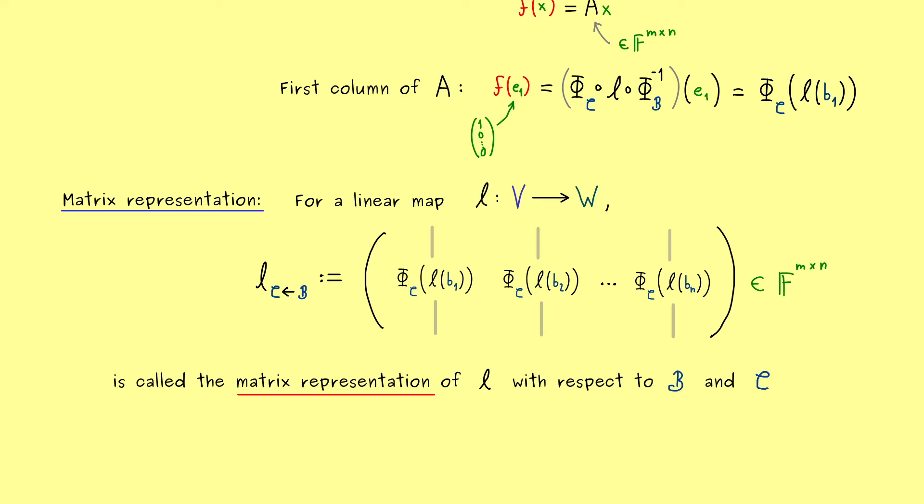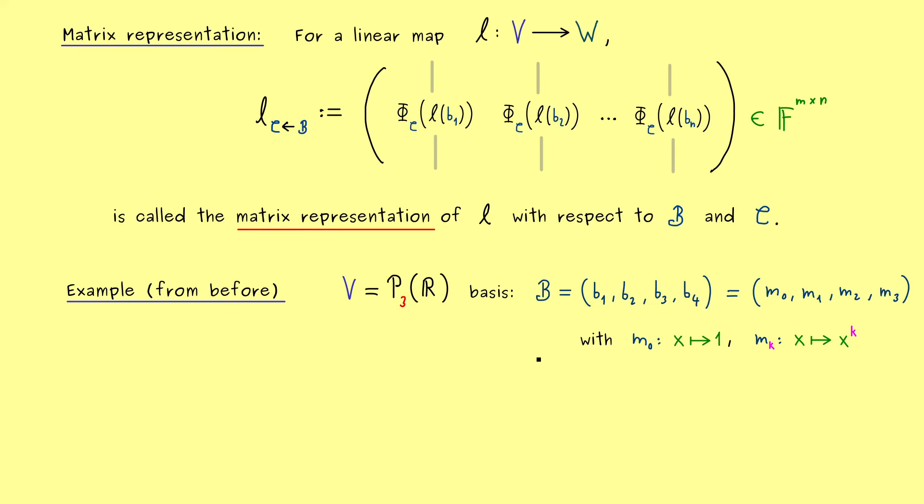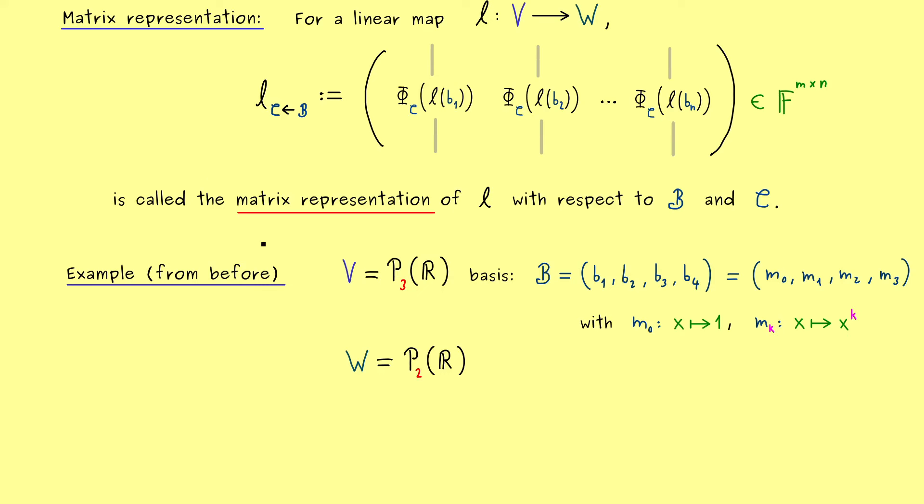And now we already know that the first column of the matrix has to look like this, and then the second column here gets the basis element b2 and so on. And there we have it. This is our M times N matrix. And as already mentioned, we call it the matrix representation of the linear map L with respect to the basis B and C. Hence, if you choose different bases here, you will get out a different matrix as a representation for L. Then for the end of the video, I would say, let's revisit our example from before. There we had the vector space V given by the polynomials with maximal degree 3, and we had a basis given by the monomials.